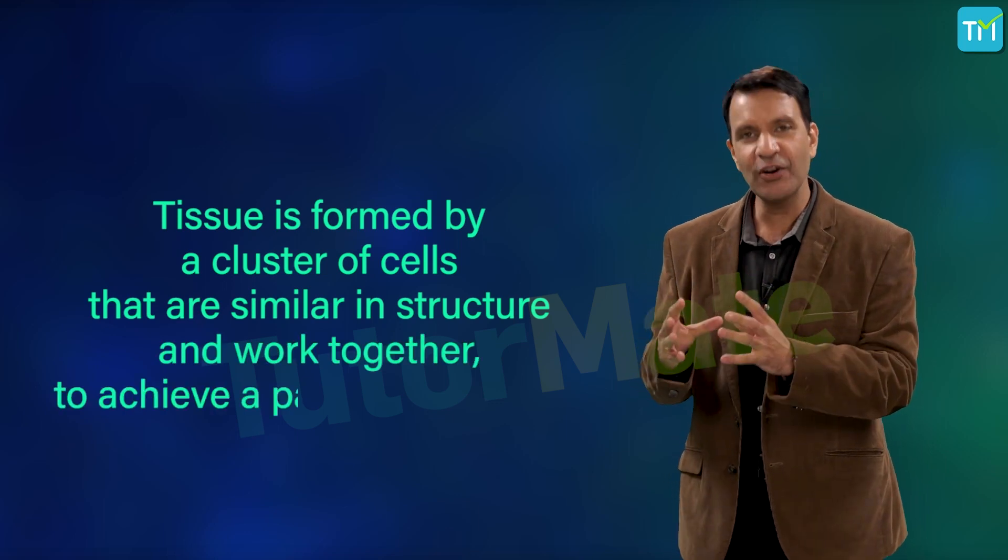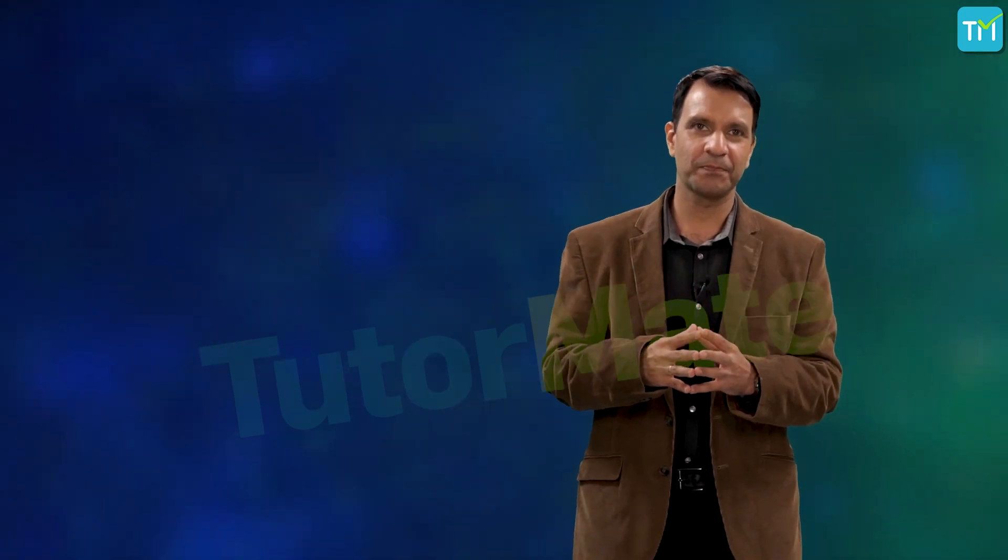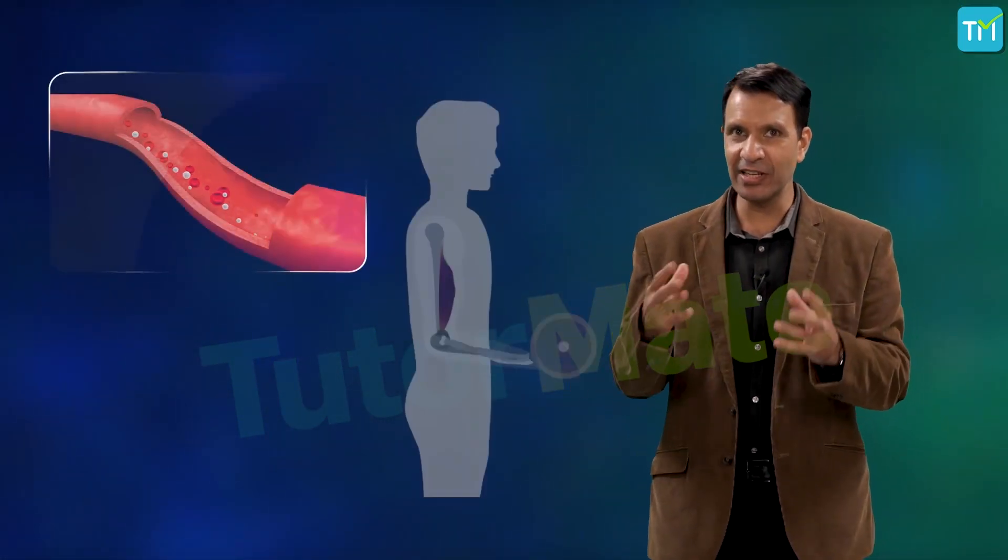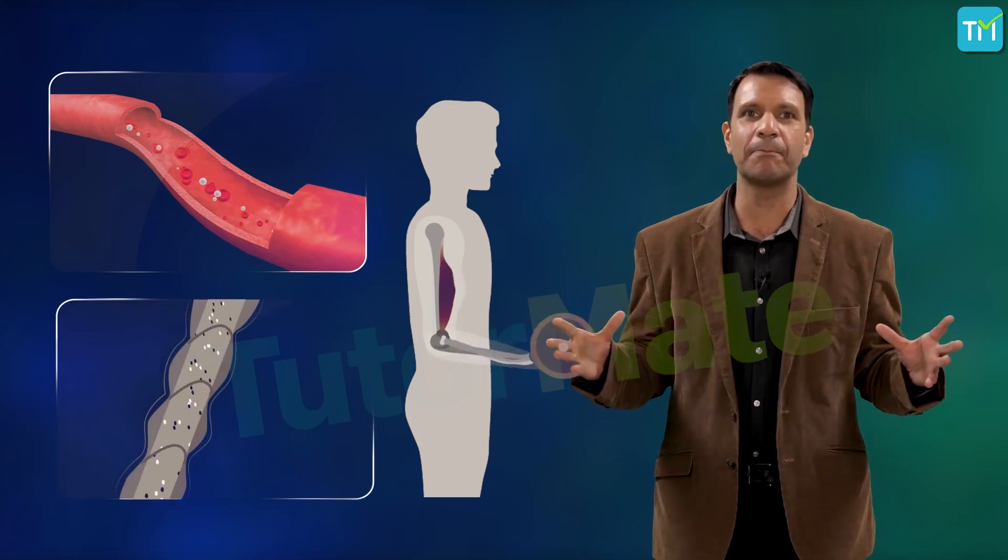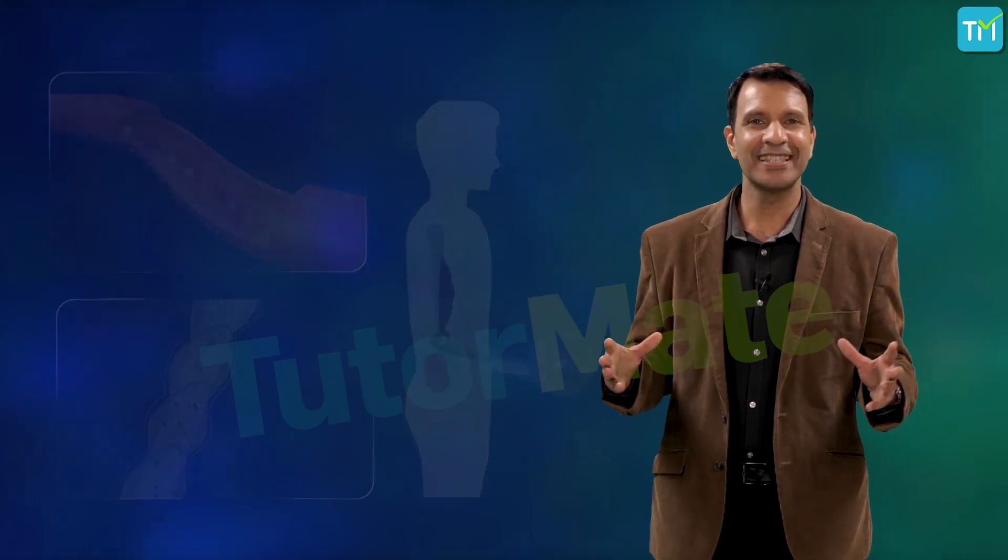A tissue is arranged and designed in a way that it yields the highest possible efficiency of function. Blood and muscle in us and other animals, and phloem in plants, are all examples of tissues. Does every organism have similar kind of tissues? The answer is no.